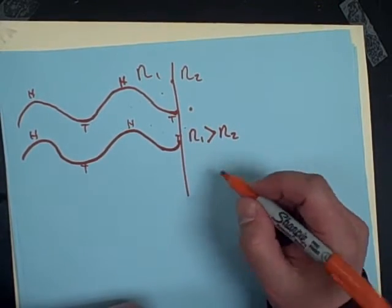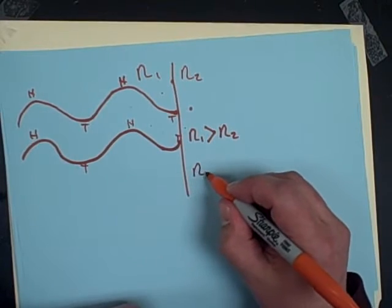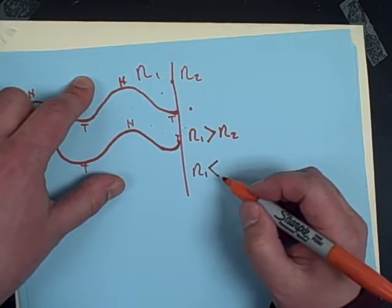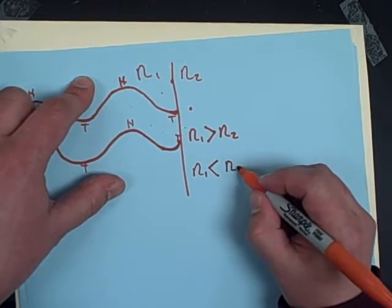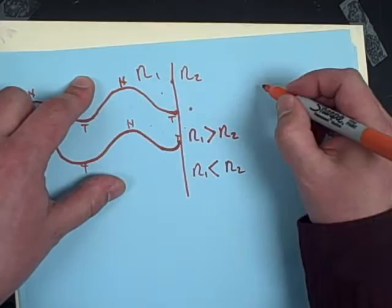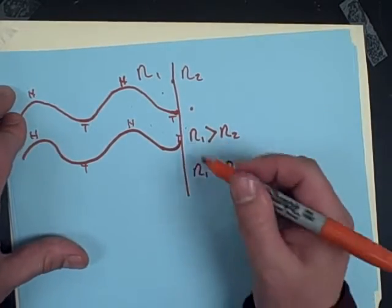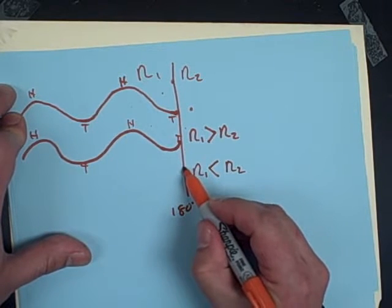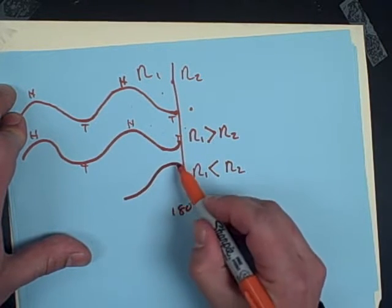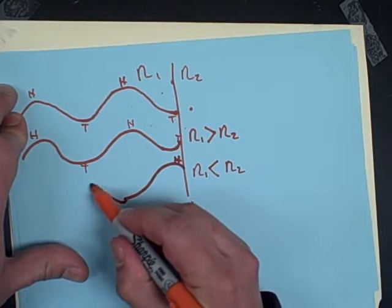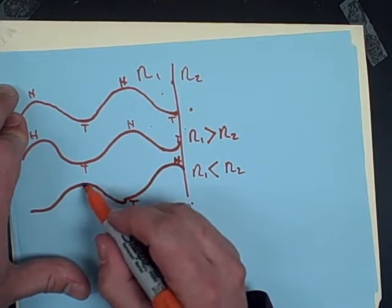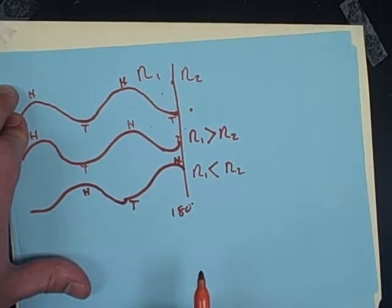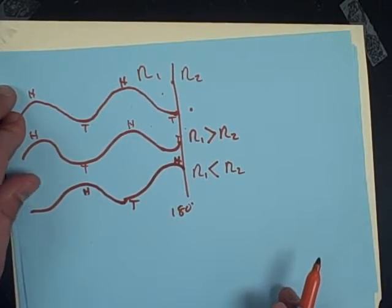However, if material one has a smaller index of refraction than material two — say air going into glass — then we have a 180-degree phase change. If we arrive on tails, we leave on heads. The reflected wave is 180 degrees out of phase, so heads meets tails, and we would have destructive interference if those two waves were interfering with each other.